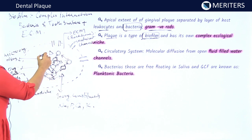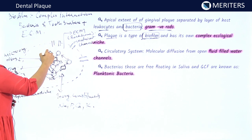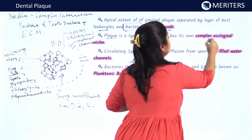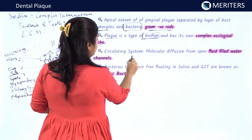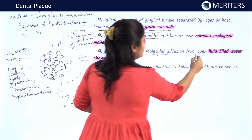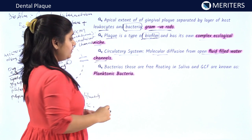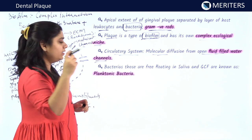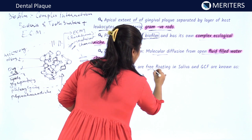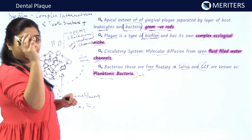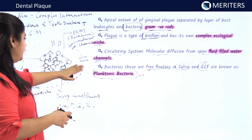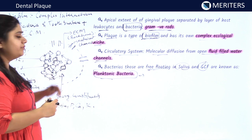Plaque is a type of biofilm with its own complex ecological niche. The plaque has a circulatory system, and molecular diffusion of nutrients occurs through these open fluid water channels. The saliva in the mouth consists of various planktonic bacteria — free-floating bacteria present in saliva and GCF. These free-floating bacteria come in contact with the salivary pellicle and the bacteria in the biofilm, attracting each other to form part of the plaque biofilm.